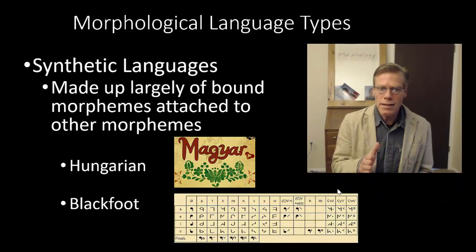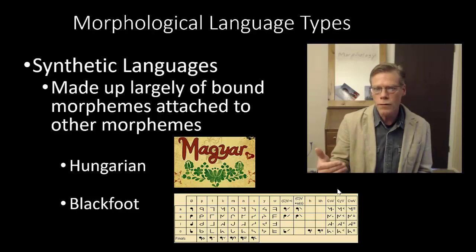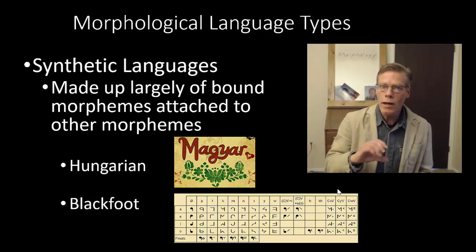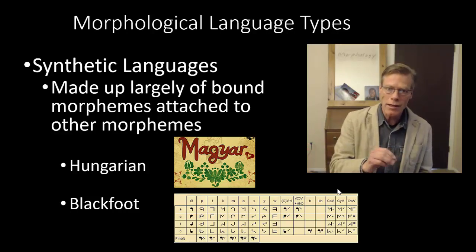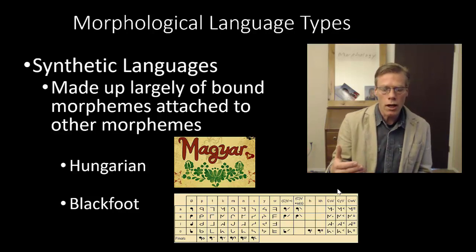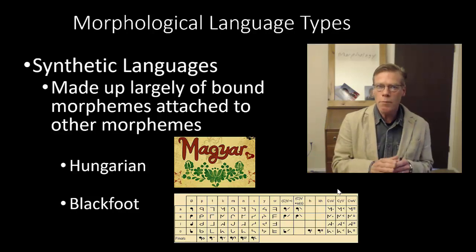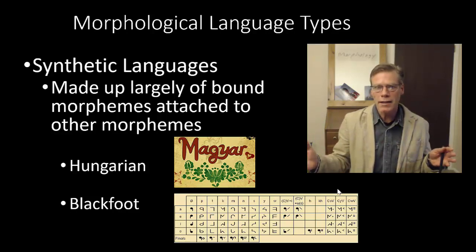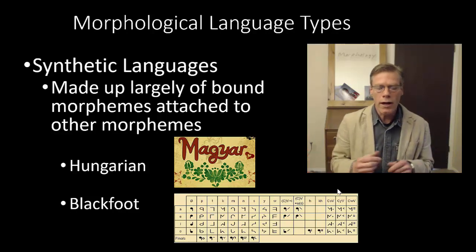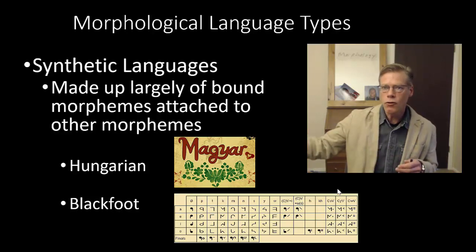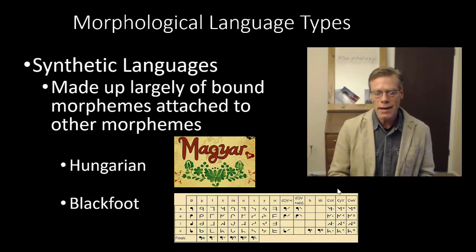Then we'll look at synthetic languages. These are made up largely of bound morphemes attached to other morphemes. That's not to say that there aren't free morphemes in these languages — it's just that, relatively speaking, relative to analytic languages, there are fewer of them. Hungarian is a good example of a synthetic language, as is Blackfoot, and they represent sort of extremes on that continuum within synthetic languages, where Hungarian is probably closer to analytic languages and Blackfoot is at the extreme.